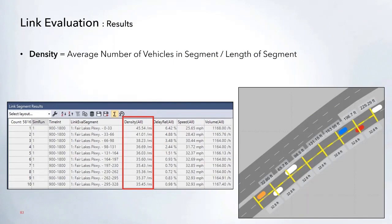The first result is link density, which is the average number of vehicles in the segment divided by the segment length. In this example, the 32.8-foot segments are measured out, and for each segment, density is calculated based on the average number of vehicles in that segment divided by its length.